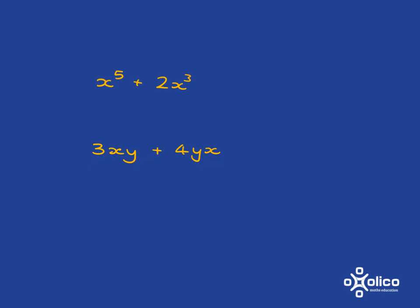3xy plus 4yx. At first glance, xy and yx don't appear to be exactly the same thing, but you should know that if you multiply, it doesn't matter the order in which you do it. So 10 times 2 is the same as 2 times 10.